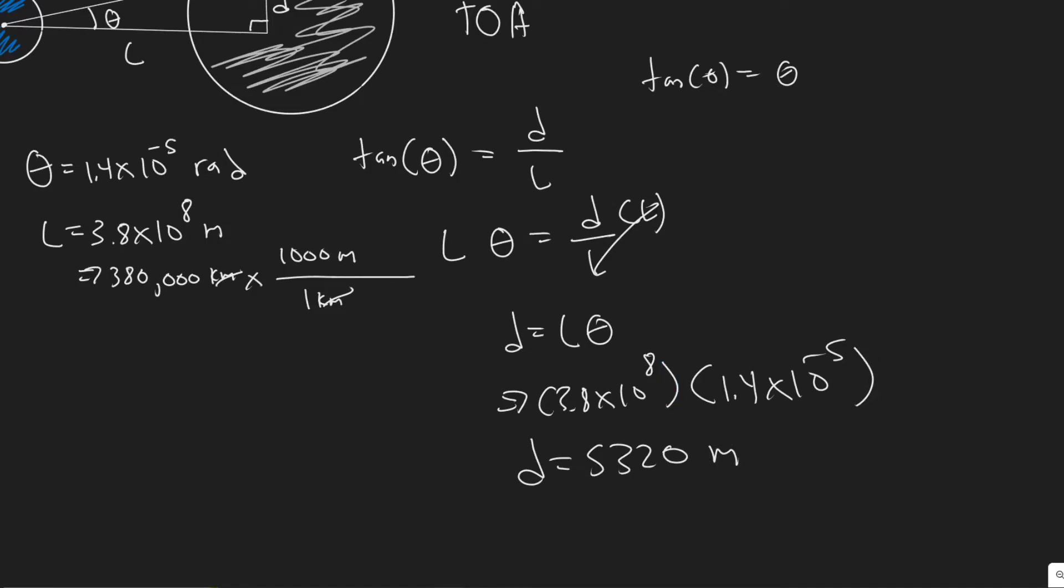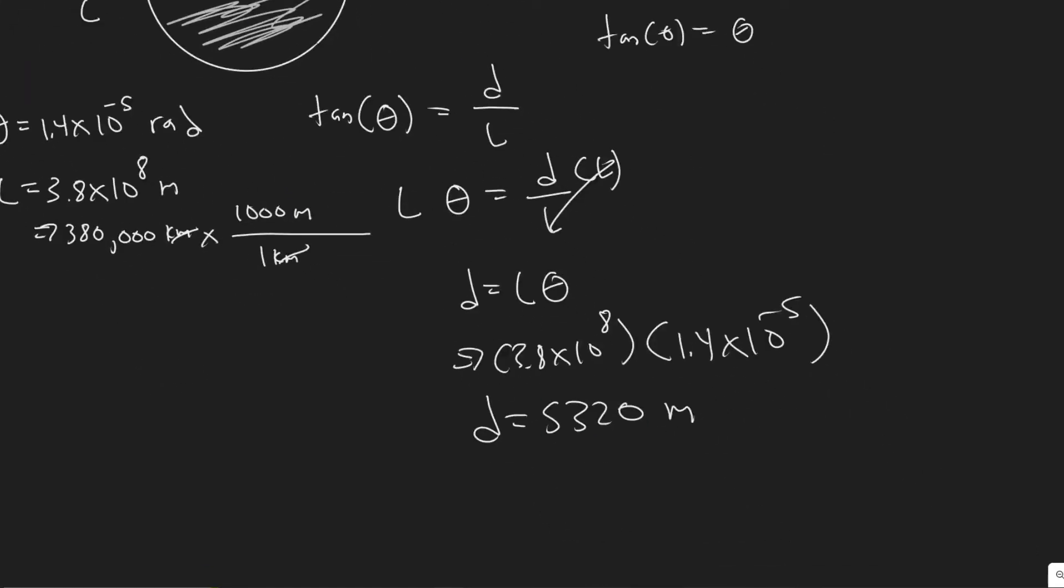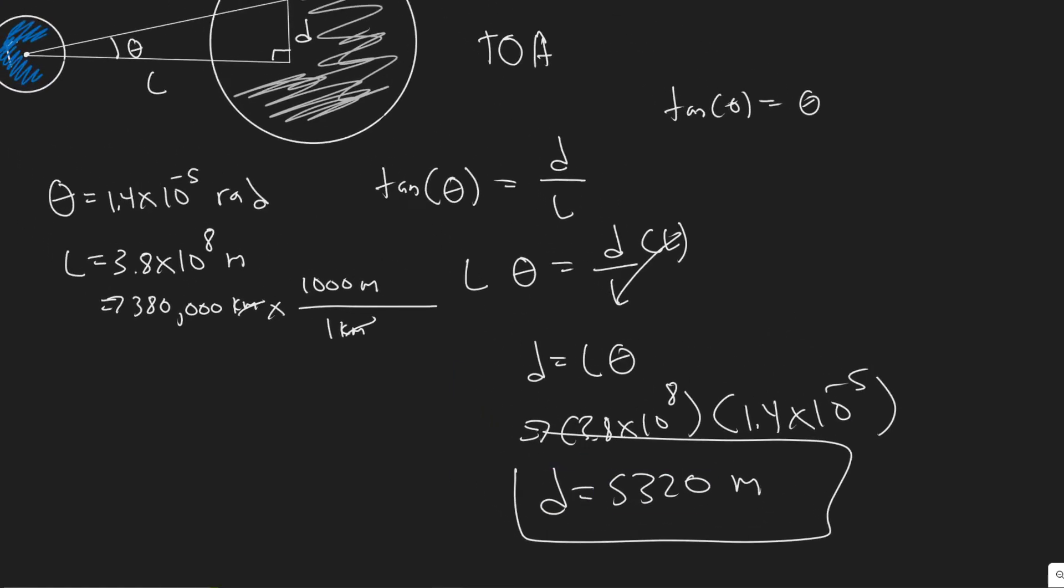And so this is going to be in meters. So essentially, the diameter of the spot, the circle it's going to make is 5,320 meters. So this is going to be your diameter.